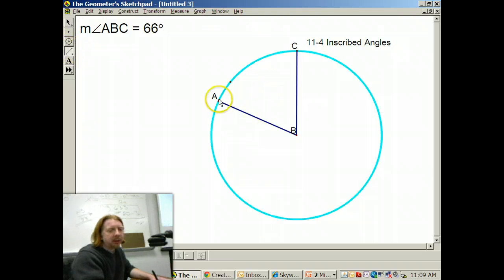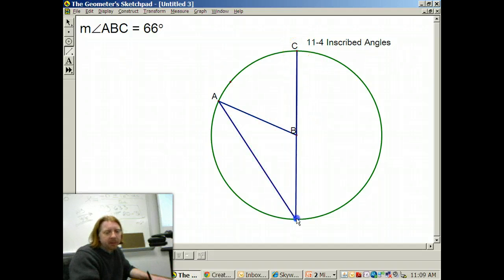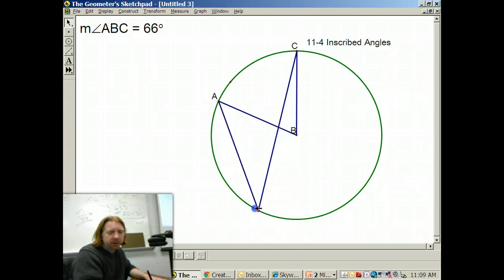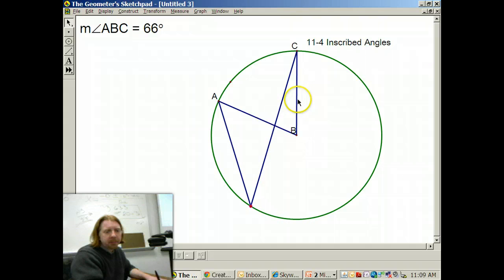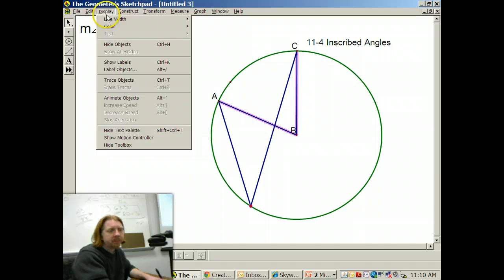Now, an inscribed angle, gentlemen, still has its endpoints on the circle. But the vertex, instead of being the center of the circle, is also on the circle. So let me slide this over so that you can see they're separate. And let me take the central angle. I'm going to make that dashed, so it's a little out of the way.